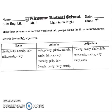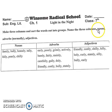Assalamualaikum, 7th class, hope you all are fine. Today we are going to solve the book exercise of our first unit 'Light in the Night.' The question is: make three columns and sort the words into groups — name the three columns Nouns, Adverbs, and Adjectives.